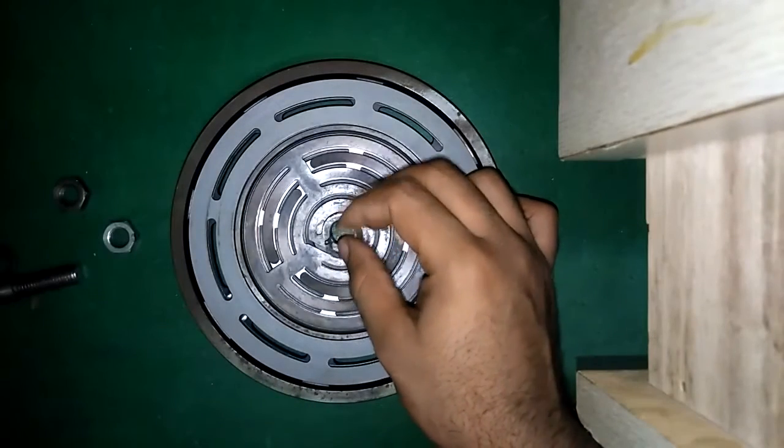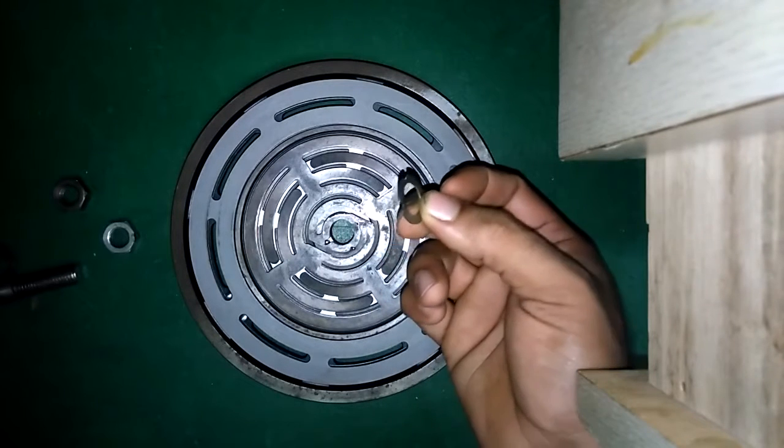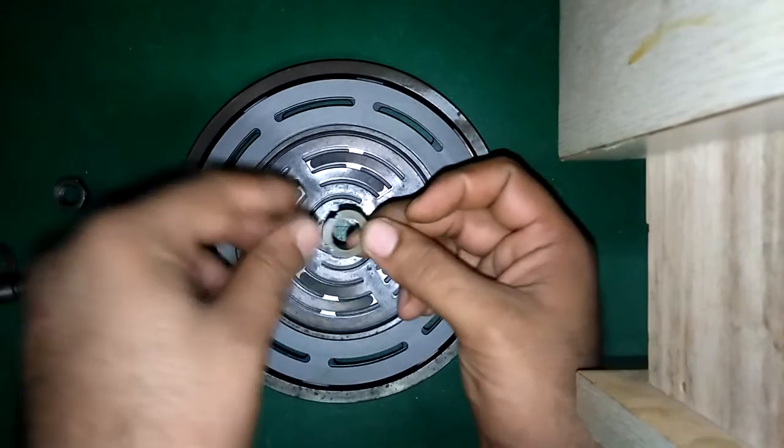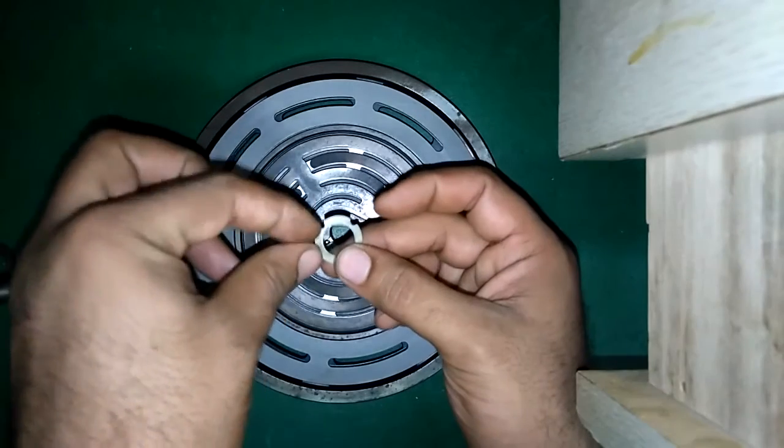This is the washer of 0.8mm. You can measure with the help of vernier caliper. Two cuts here and here.